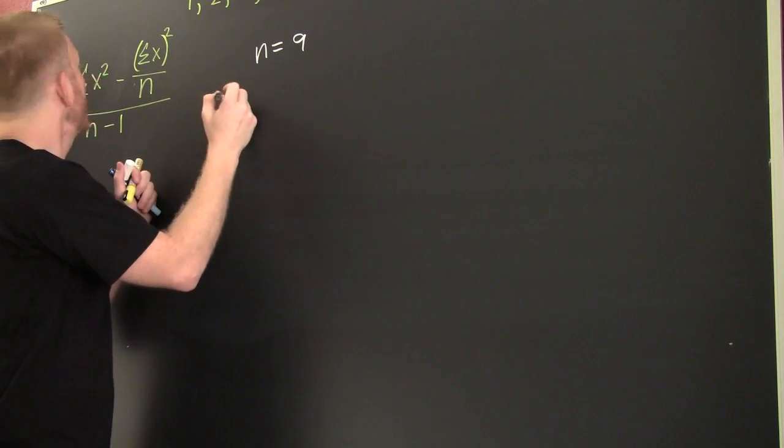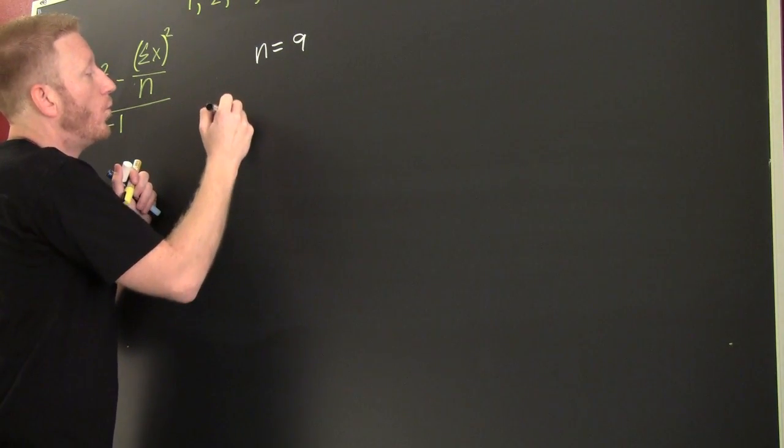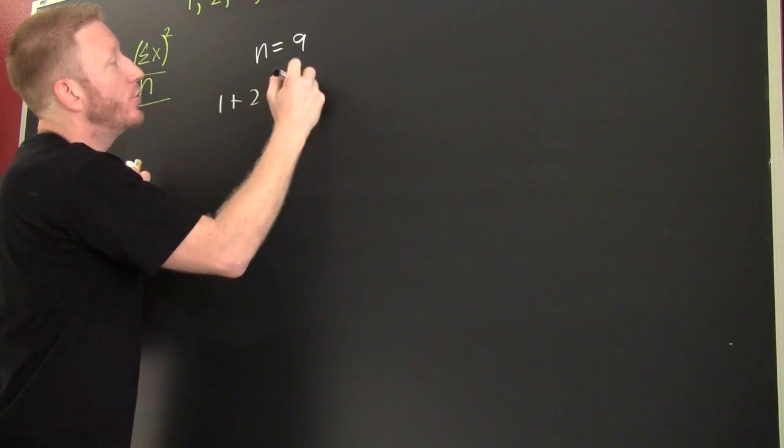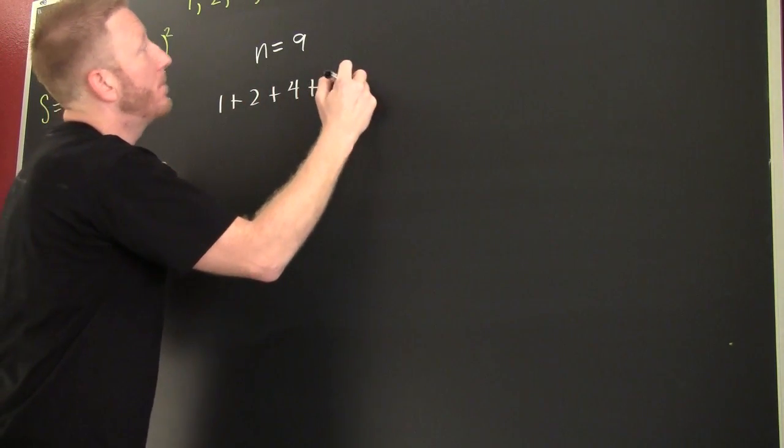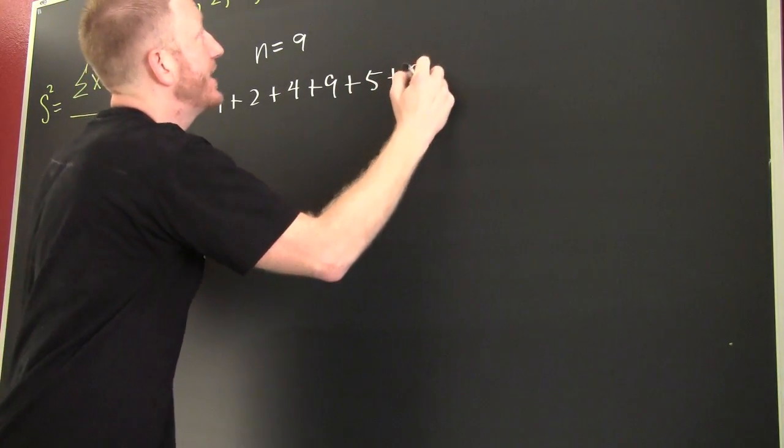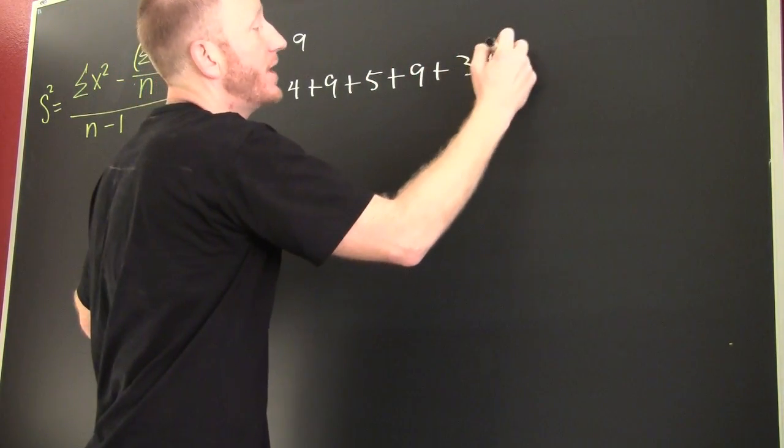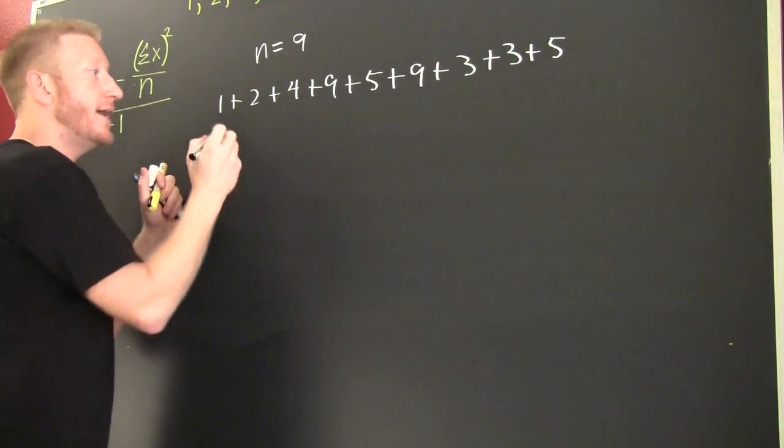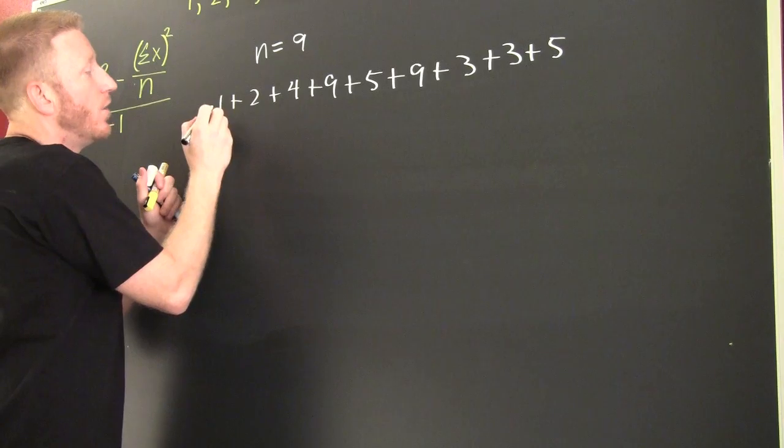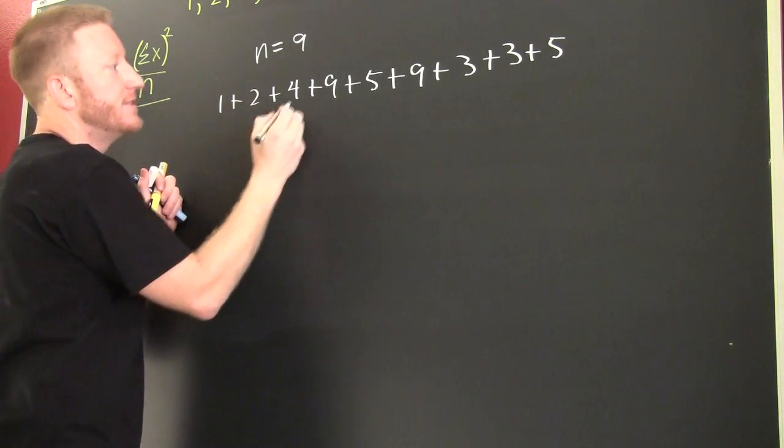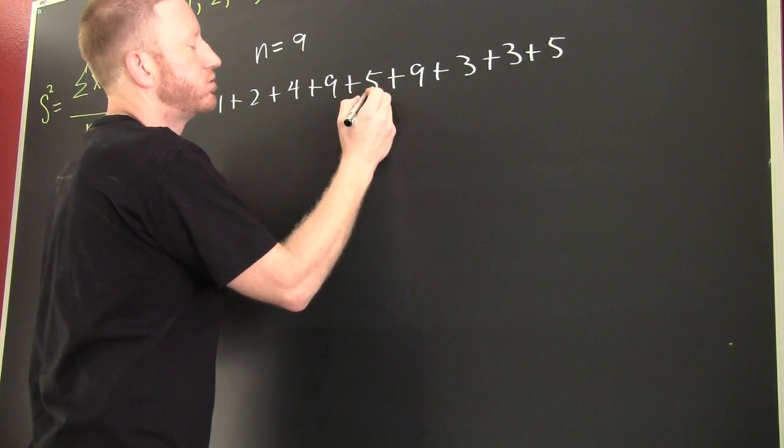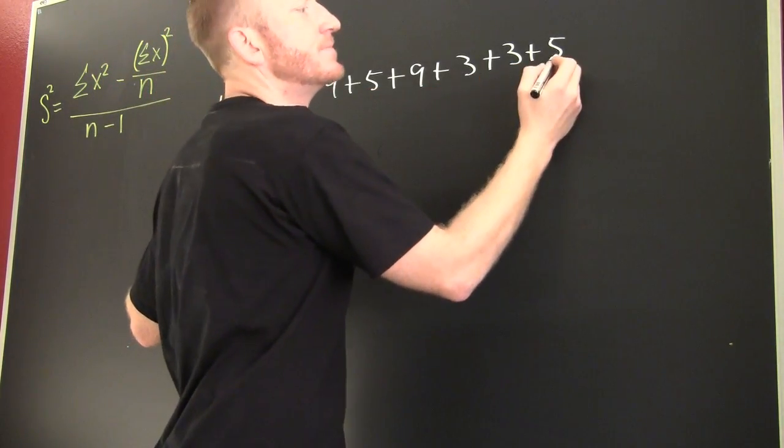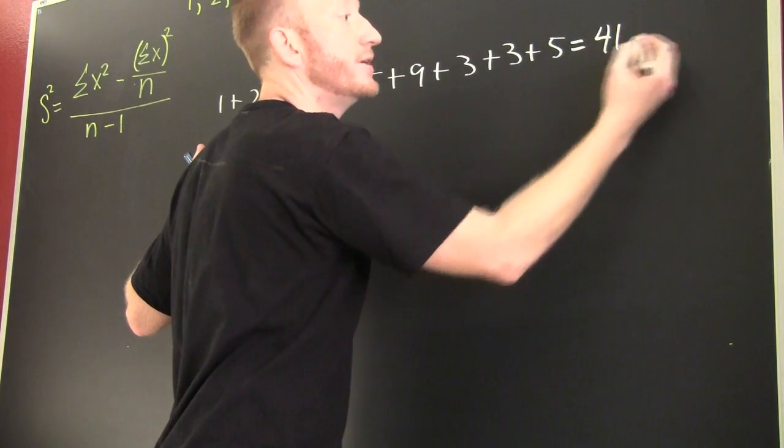So then their sum is going to be 1, plus 2, plus 4, plus 9, plus 5, plus 9, plus 3, plus 3, plus 5. Okay! So let's go ahead, let's add those up. That's 1 and 3, 7, 16, 21, 30, 33, 36, 41. So they summed up 41.